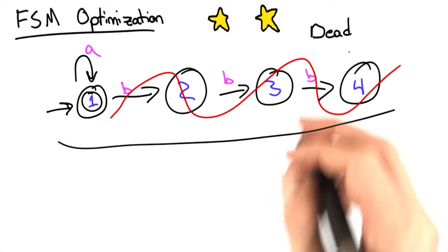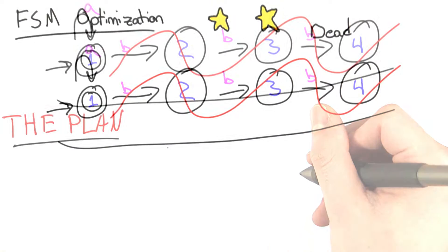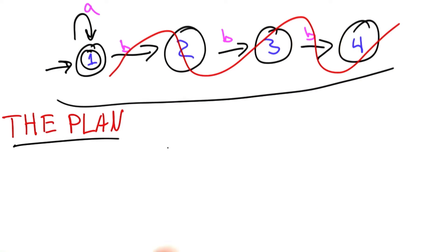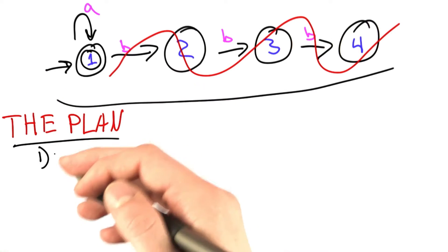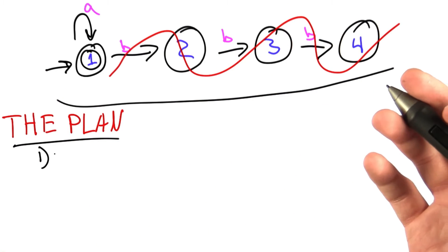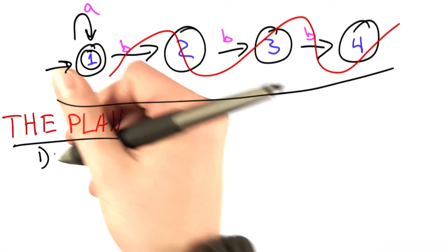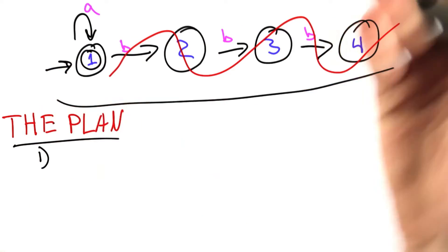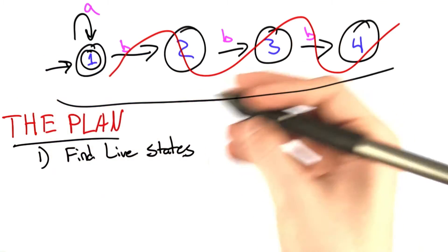So how are we going to do this? Let's come up with a plan. So here we have the plan. Step 1. Let's find the live states and the dead states. And we're going to do this by just finding the live states and assuming everything else is dead. So how are we going to do that?